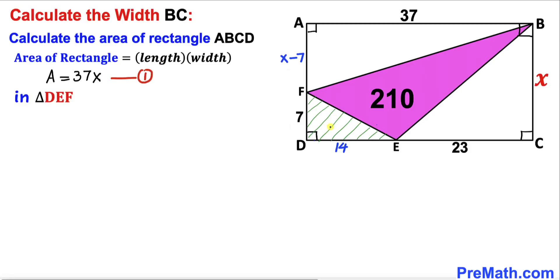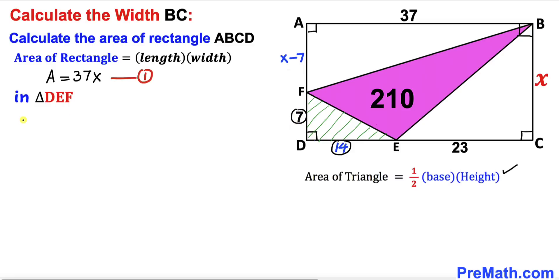Now let's calculate the area of triangle DEF. Using the area formula — area equals one-half times base times height — the base is 14 and the height is 7. So A₁ equals one-half times 14 times 7, which simplifies to 49. We'll call this Equation 2.